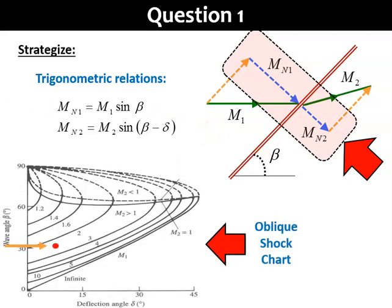Beta can be found from the oblique shock chart, which plots and relates between three different parameters: M1, beta, and delta. Since we know M1, which is 2.5, and delta, which is 10 degrees, we can find beta.